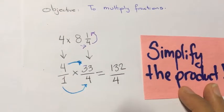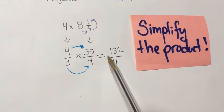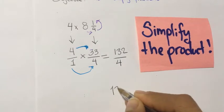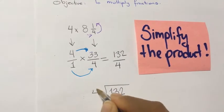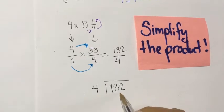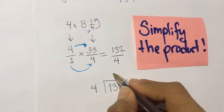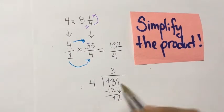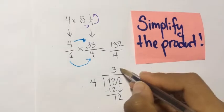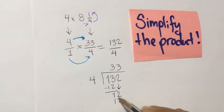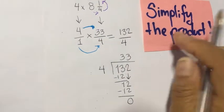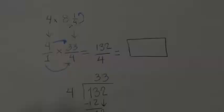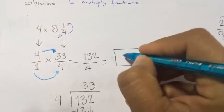The next step to solve this problem is to always simplify the answer — simplify the product. We need to divide because it's an improper fraction: 132 divided by 4. How many times does 4 go into 13? 3 times is 12, subtract, bring down 1. My answer is a whole number.